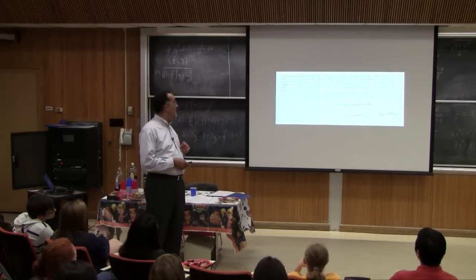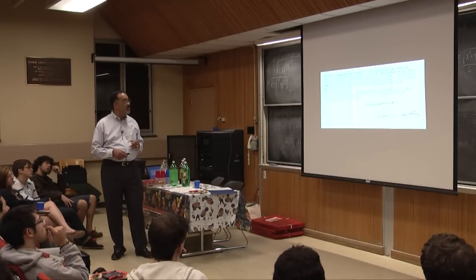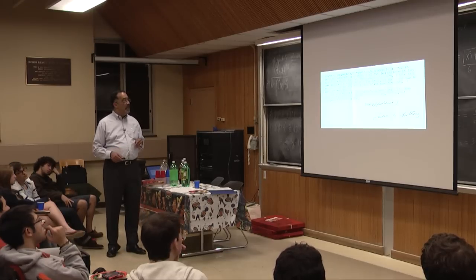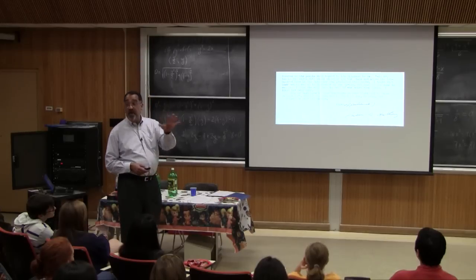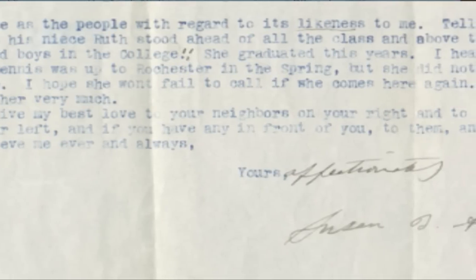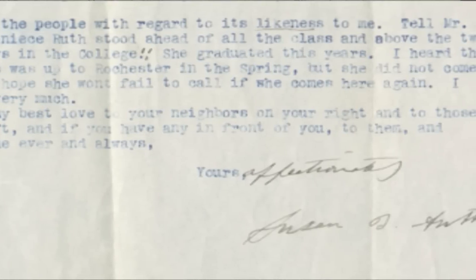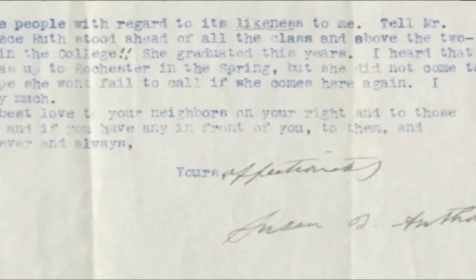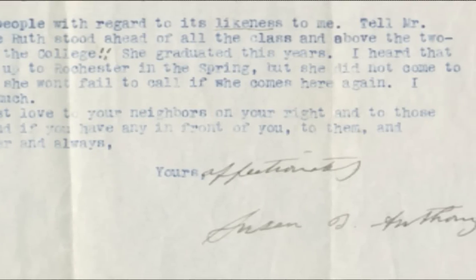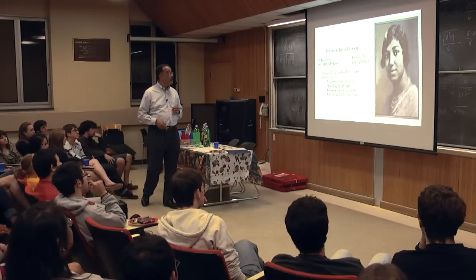This is the class of 1904, and this is the first woman admitted to Phi Beta Kappa — Ruth Hogarth Dennis. In that first class there were about four women. Here is a piece of a letter from Susan B. Anthony in which she writes: 'Tell Mr. Dennis that his niece Ruth Hogarth Dennis stood ahead of all the class and above the 200 boys in the college!!' Double exclamation point. 'Give my best love to your neighbors on your right and to those on your left... believe me ever and always yours affectionately, Susan B. Anthony.'